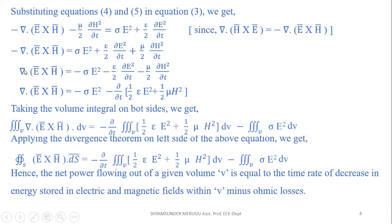Multiplying both sides by a negative sign, we get: ∇ · (E̅ × H̅) = −σ E² − (ε/2) ∂E²/∂t − (μ/2) ∂H²/∂t. Simplifying further, taking ∂/∂t common: ∇ · (E̅ × H̅) = −σ E² − ∂/∂t (1/2 ε E² + 1/2 μ H²).